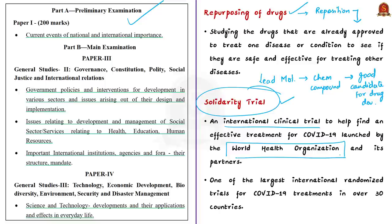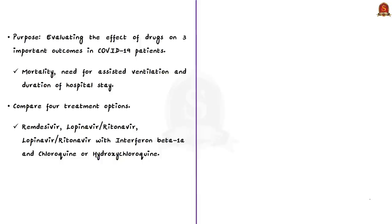It is one of the largest international randomized trials for COVID-19 treatments, enrolling almost 12,000 patients in 500 hospital sites in over 30 countries. The trial is evaluating the effects of drugs on three important outcomes in COVID-19 patients: mortality, the need for assisted ventilation, and duration of hospital stay. According to the WHO, the Solidarity Trial will compare four treatment options — remdesivir, lopinavir or ritonavir, lopinavir or ritonavir with interferon beta-1a, and chloroquine or hydroxychloroquine.